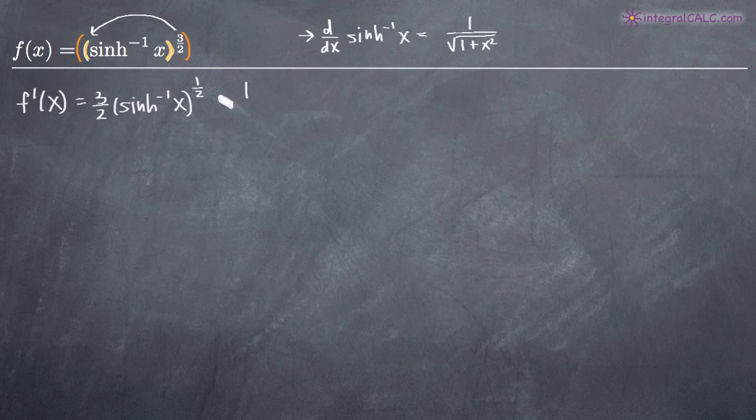So that means that we need to multiply here by 1 over the square root of 1 plus x squared. And this is now our full derivative because we've taken the derivative of the outside function and the inside function, and now we just need to simplify this.